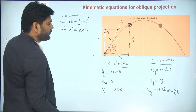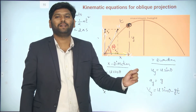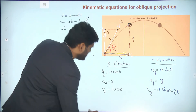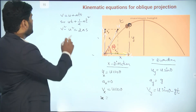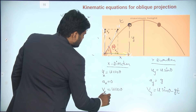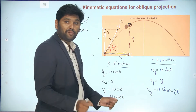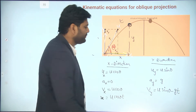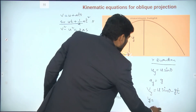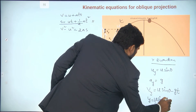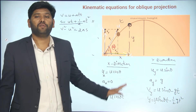The last physical quantity is displacement. Along the x direction, displacement x = u cosθ · t, using the second equation of motion with zero acceleration. Along the y direction, displacement y = u sinθ · t − ½g·t². This is how the equations of motion change for projectile motion.